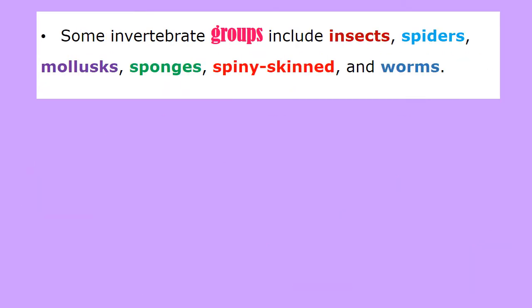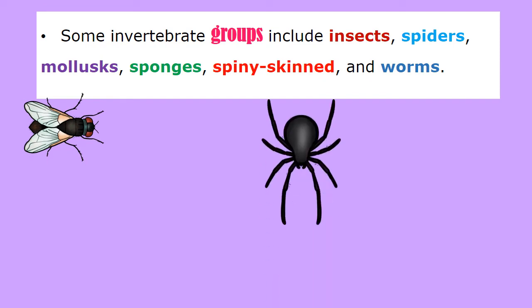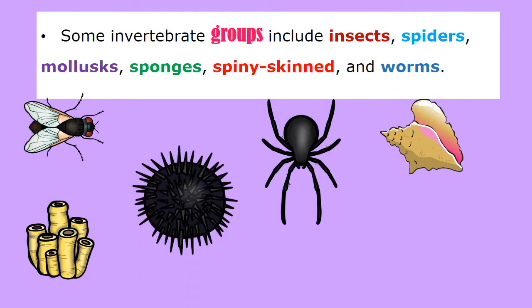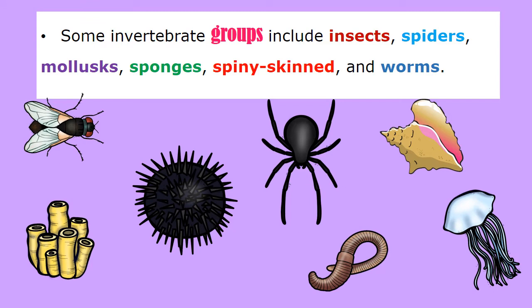Some invertebrate groups include the insects, the spiders, the molluscs, sponges, spiny skins — these are the echinoderms — and worms. Here we have the fly, an insect; the spider; the conch, which is a mollusc; the sponges; the sea urchin, the spiny skinned; and then the worm. We also have the jellyfish, which is also in the echinoderm group.